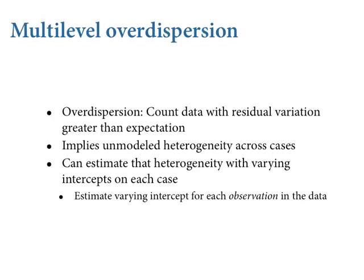Very quickly, last thing to say about ordinary varying intercepts: I jumped over classic over-dispersed count models - the beta-binomial and gamma-Poisson, otherwise known as negative binomial - last week, because I said we would deal with that same problem of over-dispersion with multilevel models, which are generally much more extensible. So I want to do just three slides very quickly on this. There's no new technology here, but this is a way to get over-dispersion of counts.